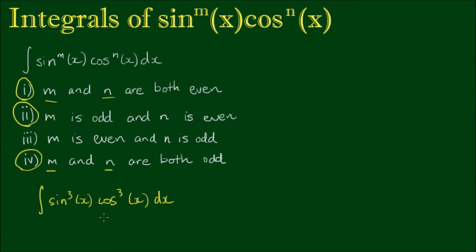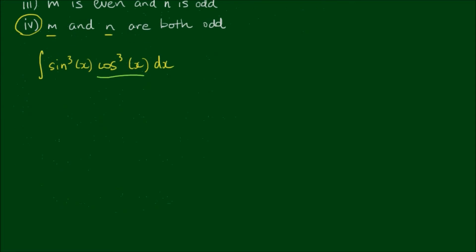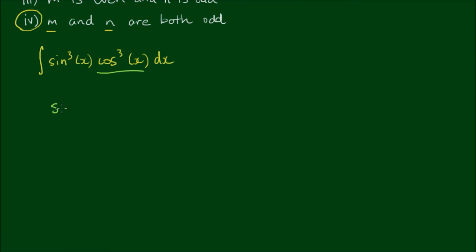So if we look at this integrand, notice that cosine is the first derivative of sine. So let's reserve one of those factors. So let's write the integrand sine cubed by cosine cubed as sine cubed by cosine squared by cosine.